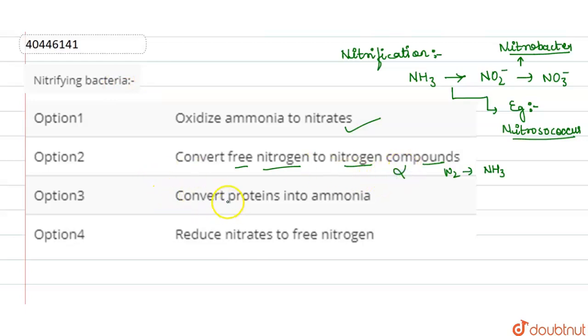Option 3 is to convert proteins into ammonia - this is also wrong. Option 4 is to reduce nitrates to free nitrogen. The nitrate converting to free nitrogen...